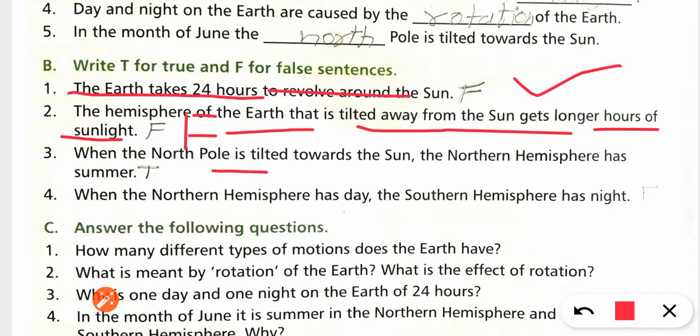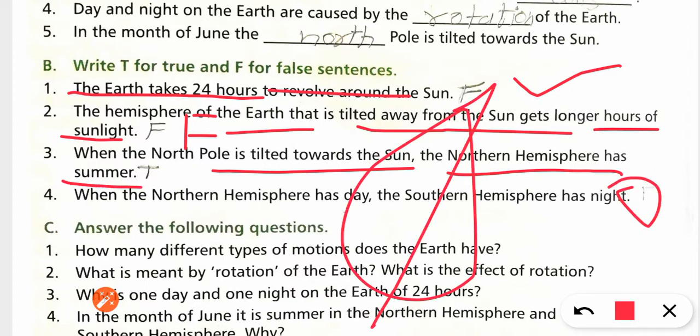When the north pole is tilted towards the sun, the northern hemisphere has summer. Very true. If the north pole is tilted towards the sun, then what will happen? Summer season.